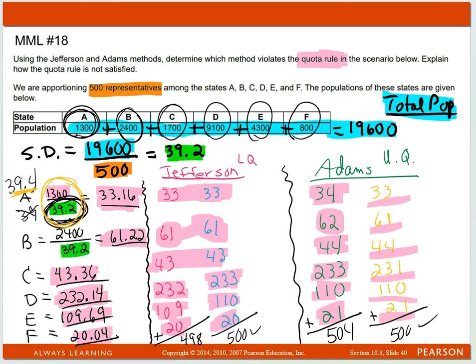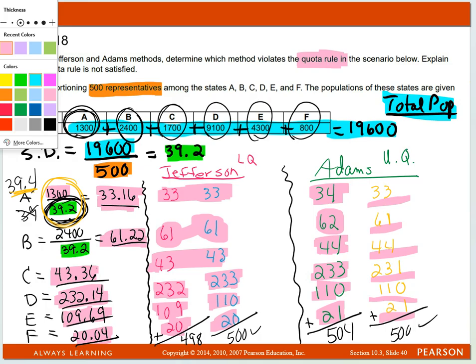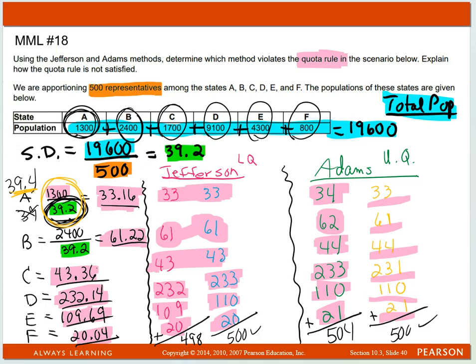The only one that violates it was this one right here. Remember, it had to be between 232 or 233 using the original standard divisor. This one says 231. That happened on State D.